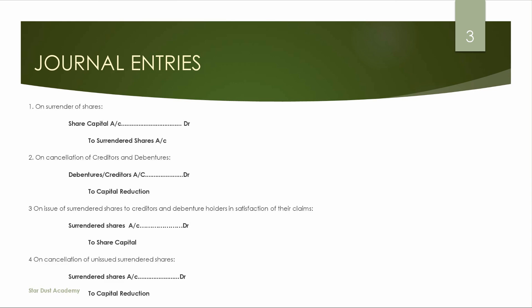The journal entry for surrender means: Share Capital account to Surrendered Shares account. We transfer on cancellation of creditors and debentures — creditors and debentures are cancelled. We normally do this entry: Debentures and Creditors account to Capital Reduction account. On cancellation in satisfaction of their claims, we will surrender shares.